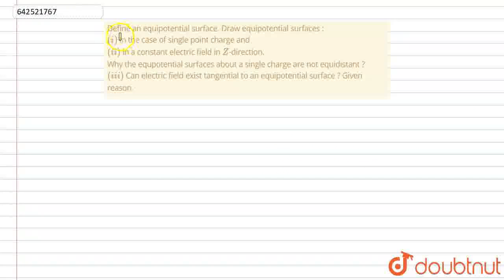Hello everyone, let's start the question. Question C is, define an equipotential surface and draw equipotential surface for, in case of a single point charge and a point 2 in the constant electric field in Z direction.